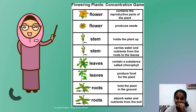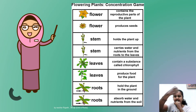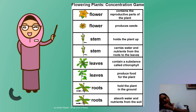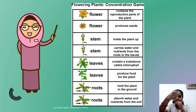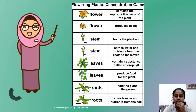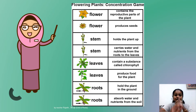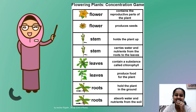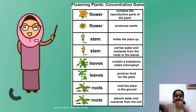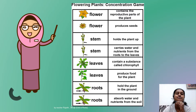The stem holds the plant up so it won't fall down. It also carries water and nutrients from the roots at the bottom up to all the other parts of the plant at the top. That is the function of the stem.